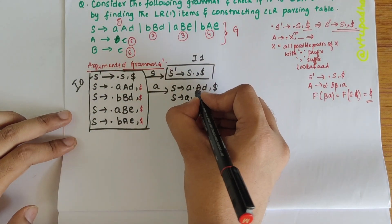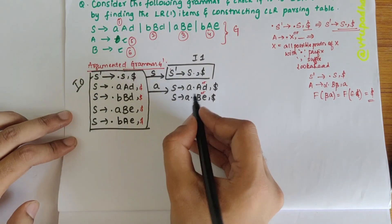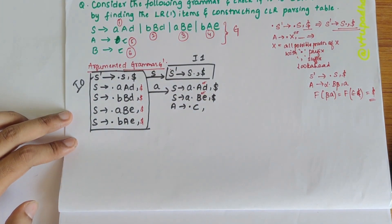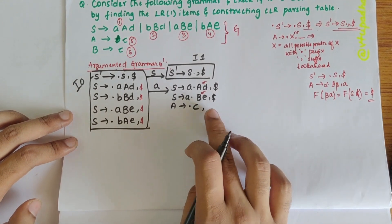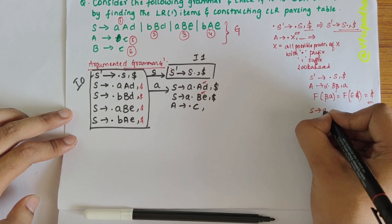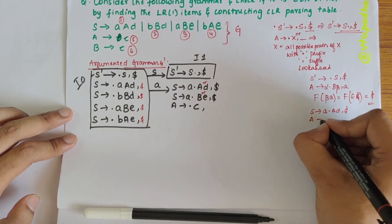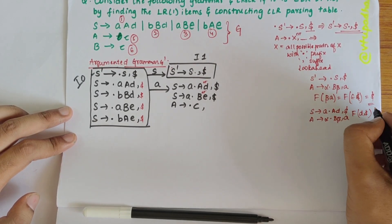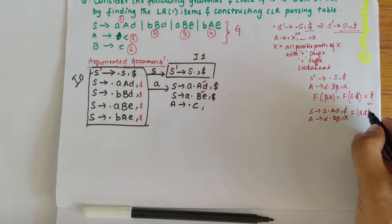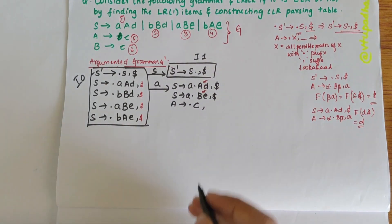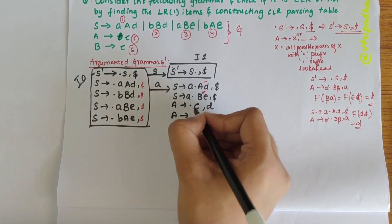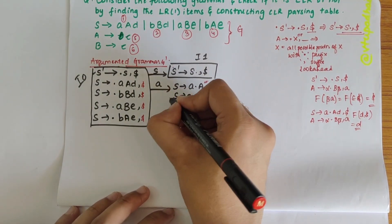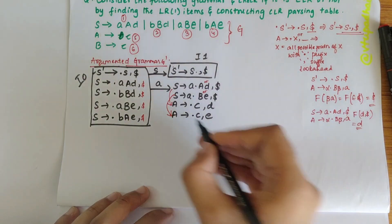After the dot I have A as a non-terminal, so I should write all possible productions of A: A → •c with the lookahead to be determined. To find the lookahead, consider S → A•Ad, $: comparing with A → α•Bβ, a, FIRST(β) means FIRST(d) which gives d. So I write A → •c, d. Similarly, A → •c, e obtained from the second production. These are the I2 productions.